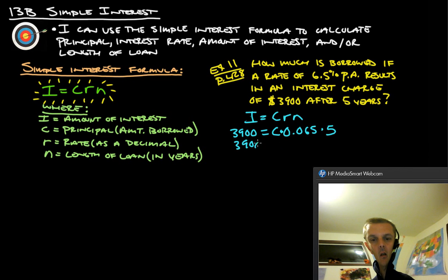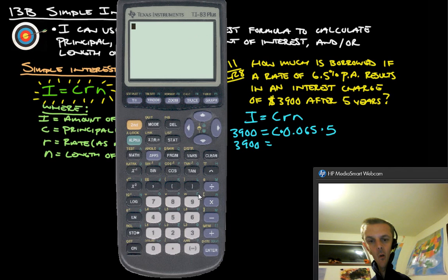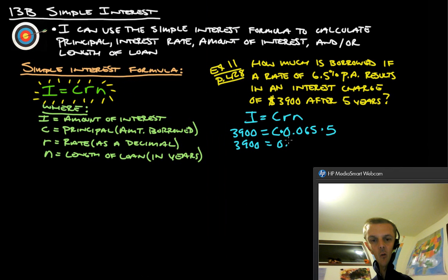So, 3900 equals, let's see. Let's figure out what 0.065 times 5 is. 0.065 times 5 gives us 0.325. So, this is 0.325 C. So, to figure out what C is, again, just good old algebra. We're going to divide both sides by 0.325. So, those simplify, reduce down to 1.